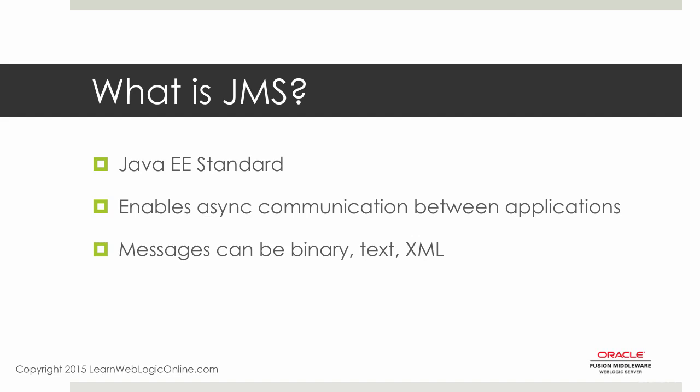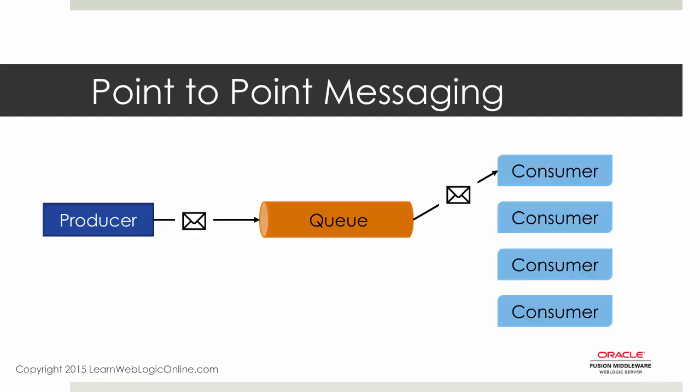In the JMS world, there are two different messaging paradigms: point-to-point messaging and publish-subscribe messaging. In point-to-point, you have one or more producers but only a single consumer. That single consumer connects to a destination to consume messages that are published. The consumer can be active or passive — meaning if a publisher creates a message and sends it to a destination, the consumer doesn't need to be actively connected. Messages in a point-to-point model are persistent.